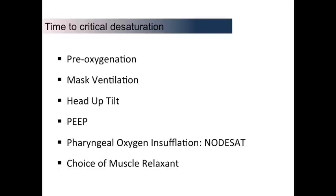So how do we increase our time to critical desaturation? There's been much written and spoken about these techniques, especially by Scott Weingart and Richard Levertan. Pre-oxygenation is the technique with which clinicians would be most familiar — we need to maximise pre-oxygenation with CPAP or PEEP. Even during rapid sequence induction, gentle mask ventilation whilst waiting for muscle relaxants to take effect is now widely accepted to be safe, providing excessive airway pressures are avoided. Using nasal prong oxygen during intubation is vitally important. Placing the obese patient in an anti-Trendelenburg or head-up position will increase their functional residual capacity, thus prolonging desaturation time. The choice of muscle relaxant and use of adjuvant drugs has been shown to have a significant effect on the time to critical desaturation, presumably by modifying oxygen consumption.